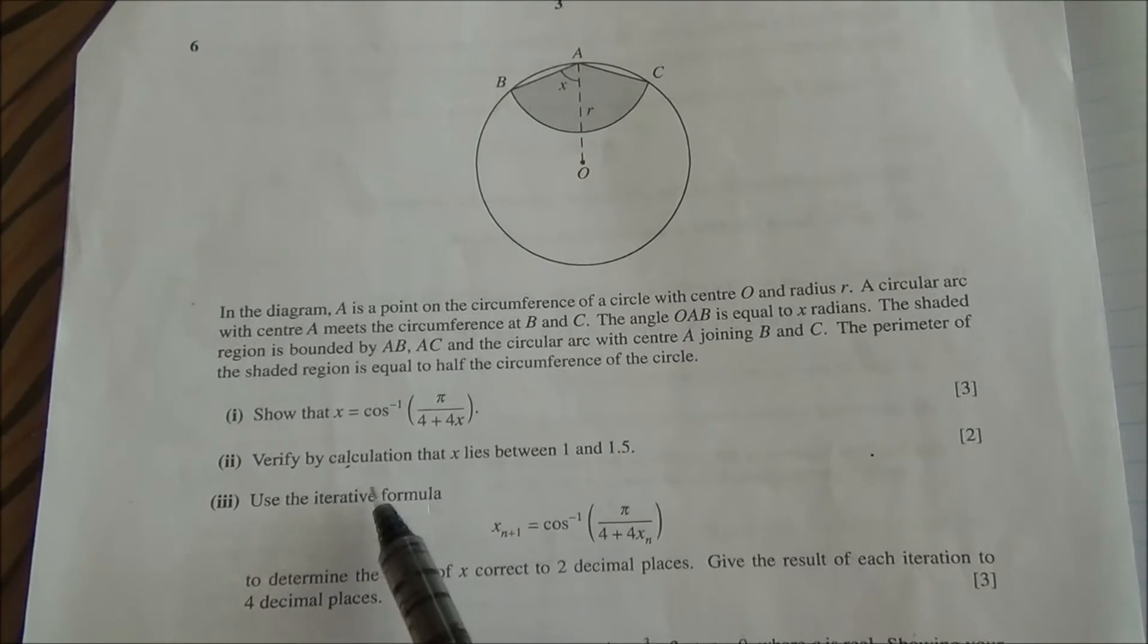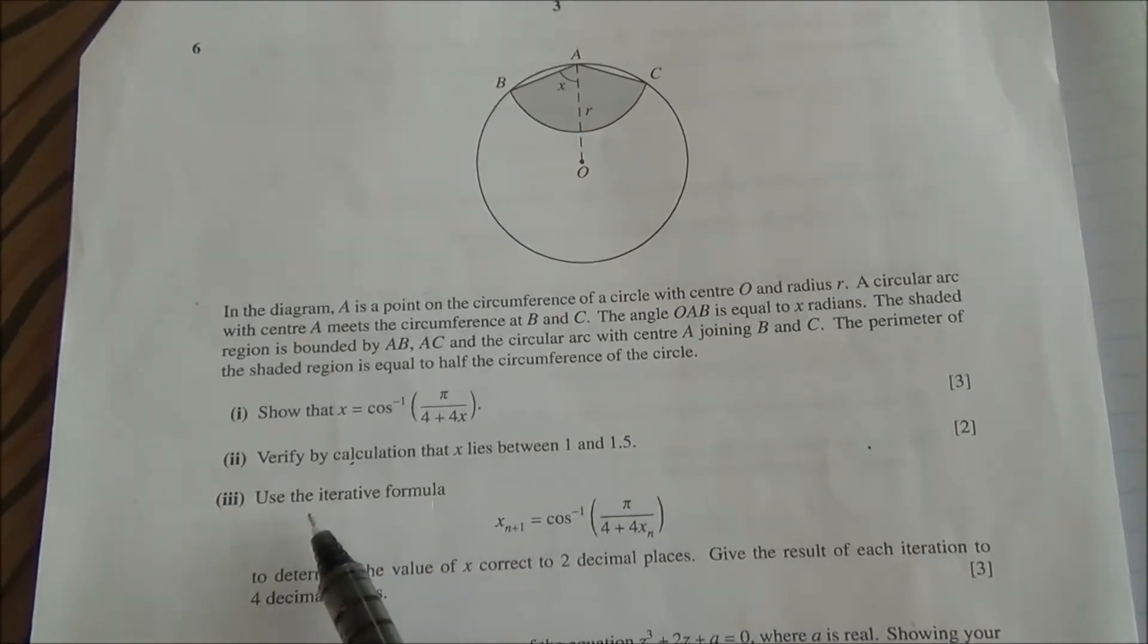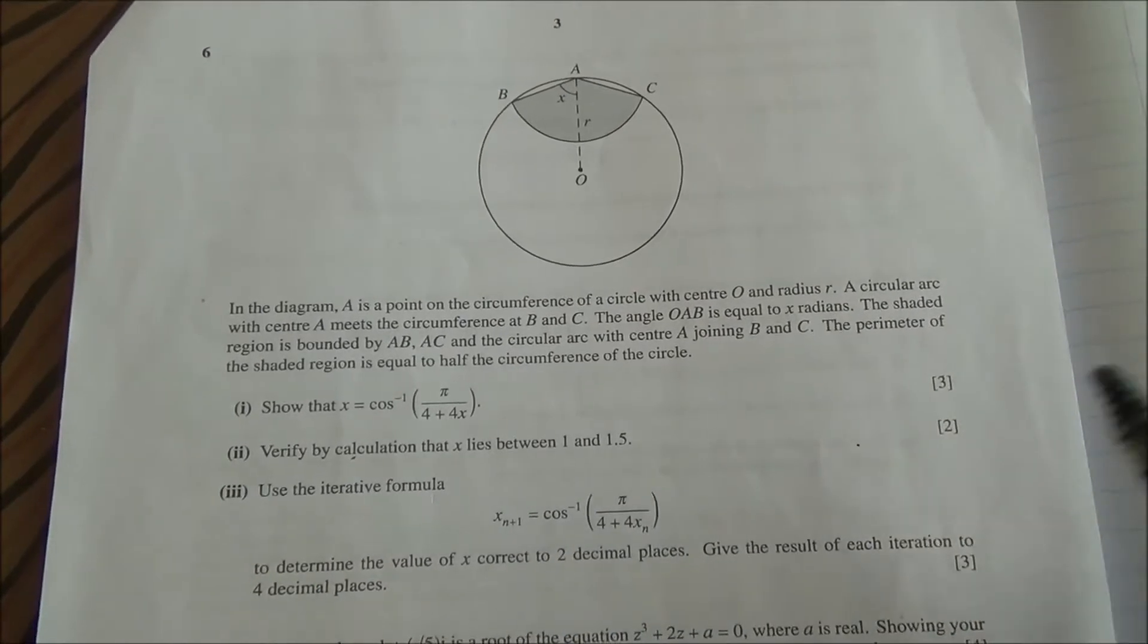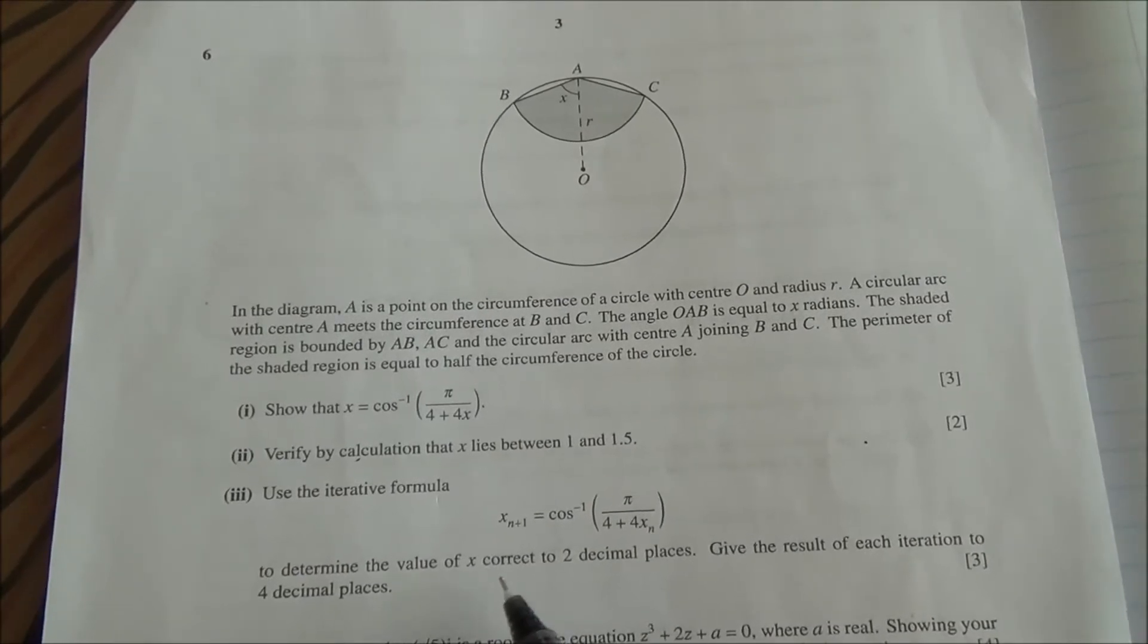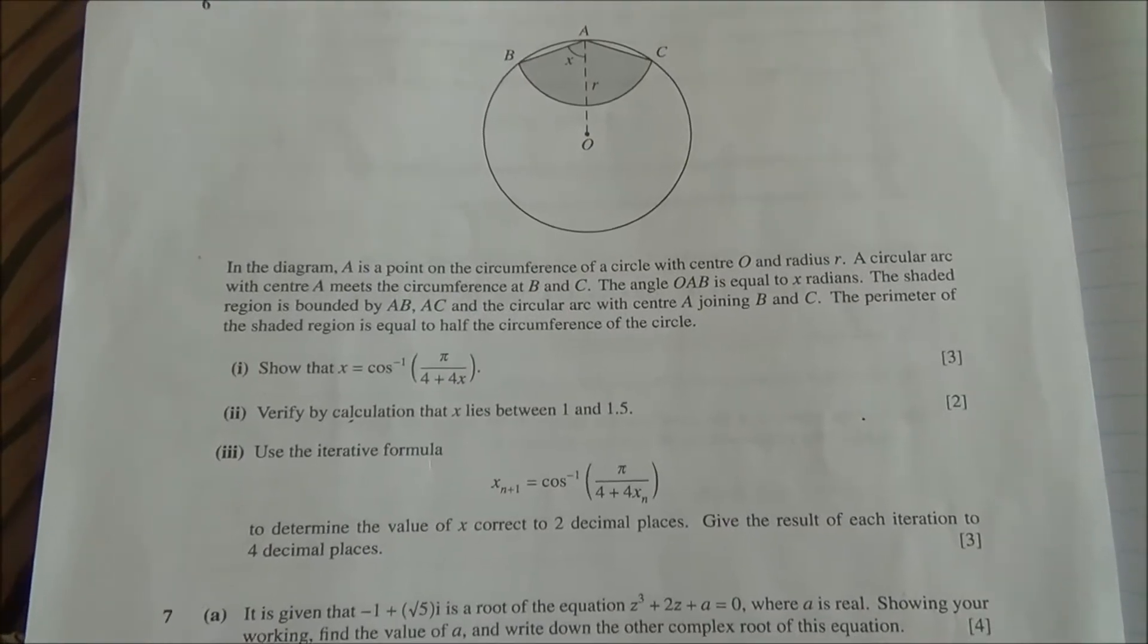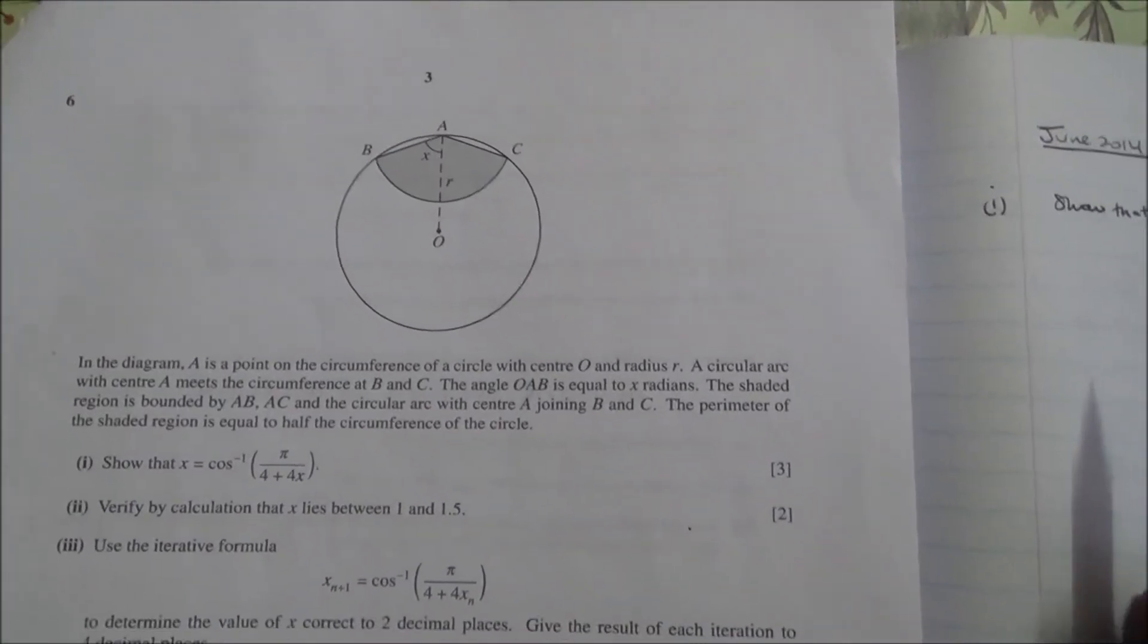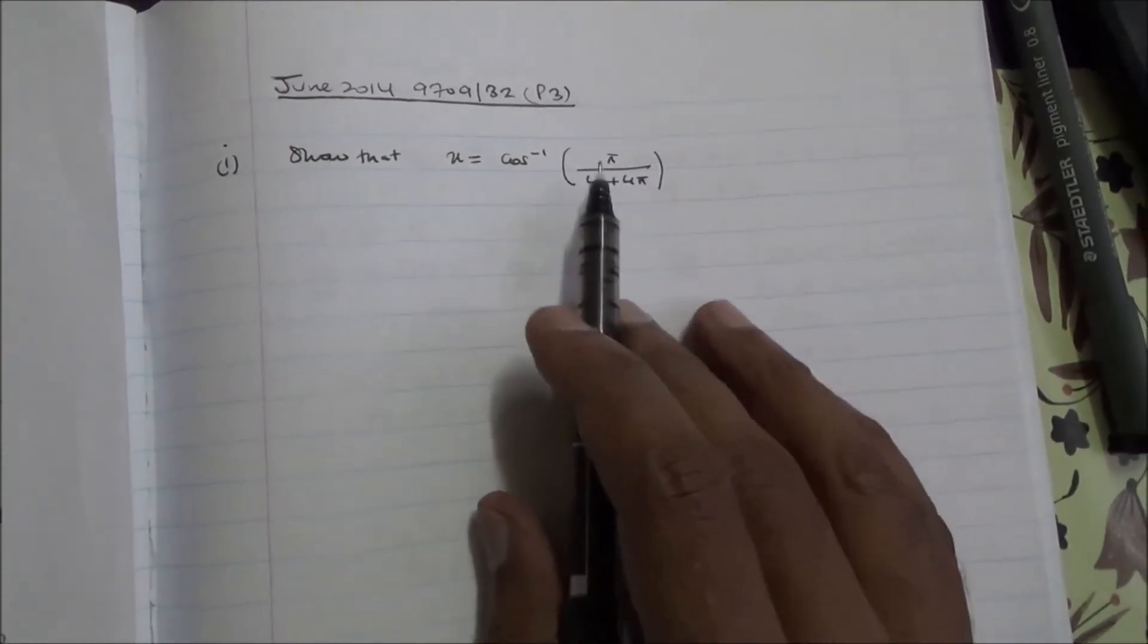For the second part, verify by calculation that X lies between 1 and 1.5. And also use the iterative formula X equals inverse cos of π upon 4 plus 4X to determine the value of X correct to 2 decimal places, giving the result of each iteration to 4 decimal places. So to show that X is equal to cos inverse of this.